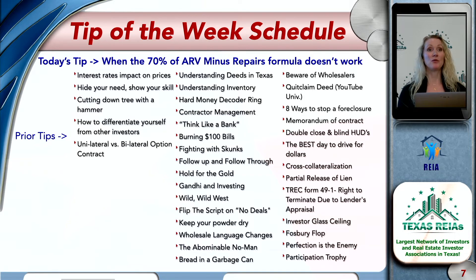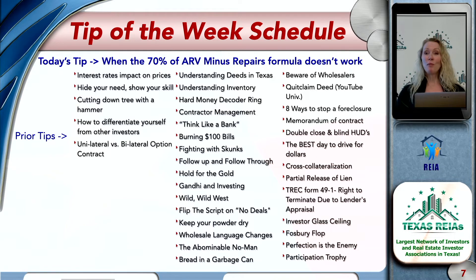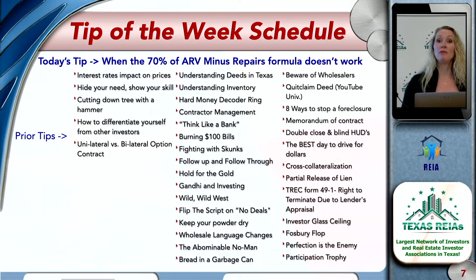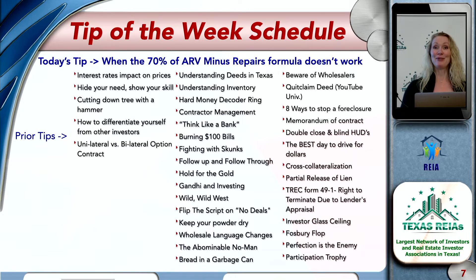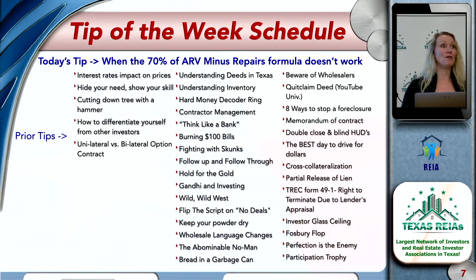How many of you are familiar with what we call the real estate investor maximum allowable offer formula? The trouble with that formula is that it works probably most of the time, but not 100% of the time. I want to go over the different times when it doesn't work, to make sure that if you're looking at a deal, you don't overpay.